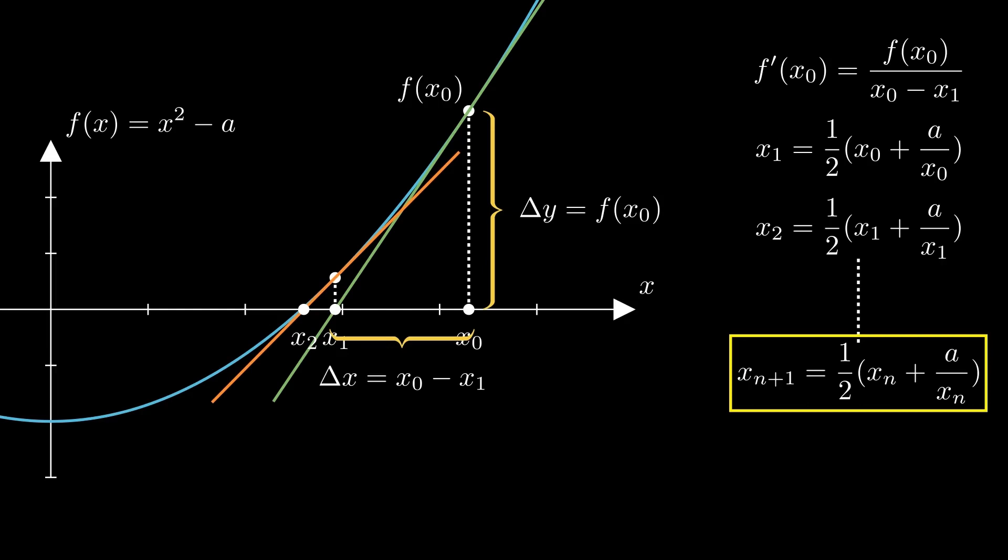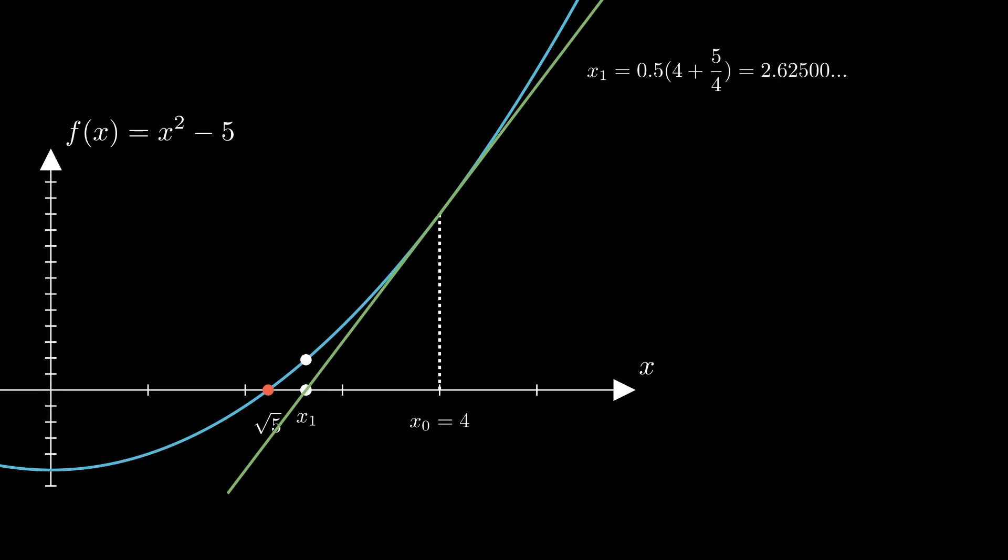Since we now have our formula, let's put it to test using an example. Consider the task of finding square root of 5. We will begin with an initial guess, say 4. Applying Newton-Raphson method, our first approximation would be 2.625.